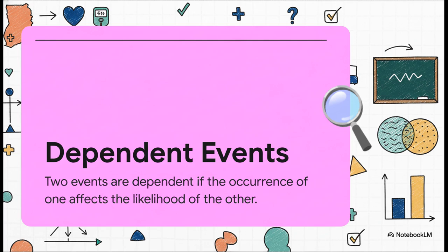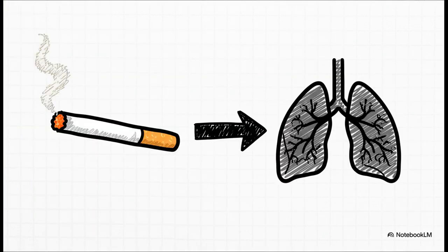Okay, but now for the other side of the coin, and this is where it gets really crucial for doctors. Dependent events. With these, the events are linked. One thing happening directly changes the odds. It changes the probability of the other thing happening.